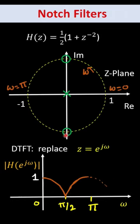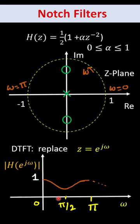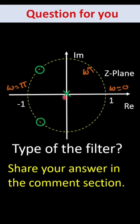If we have two zeros on the imaginary axis at this point and this point, then we will get a notch filter. Now I have one question.